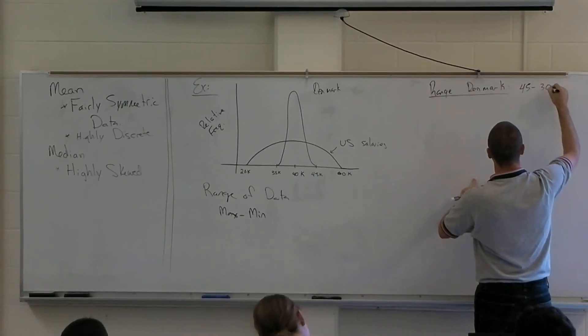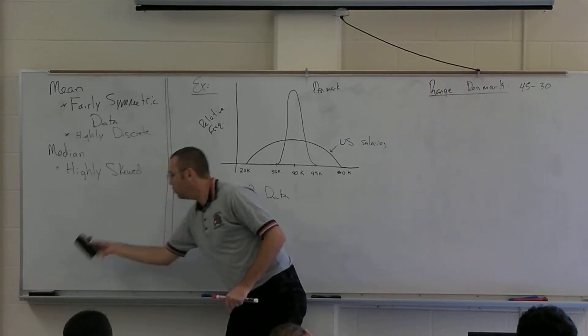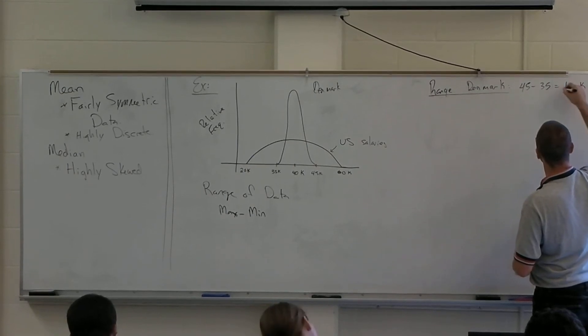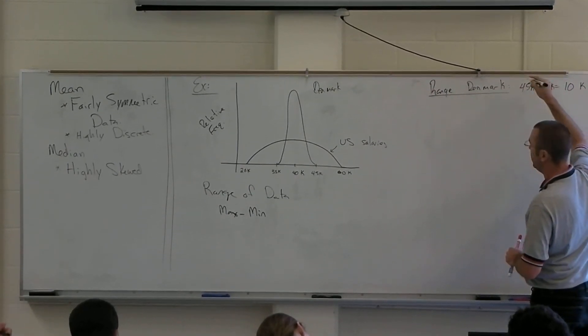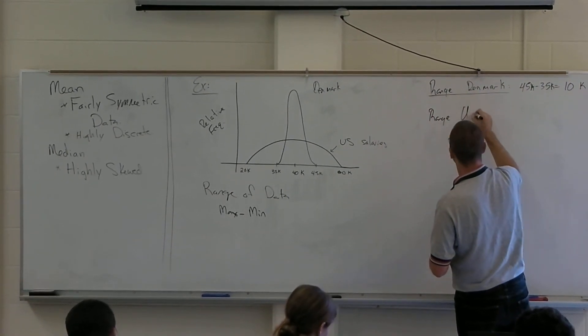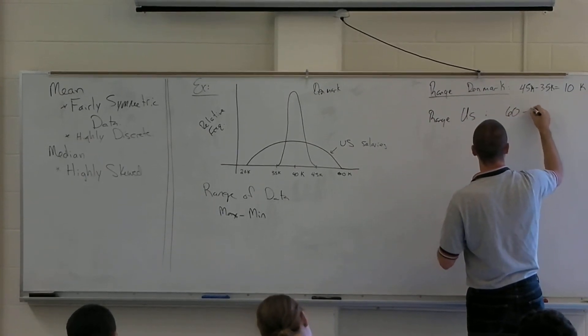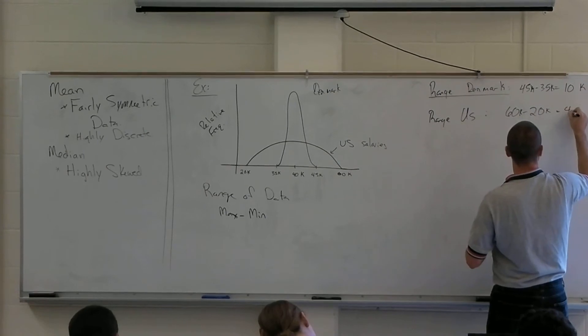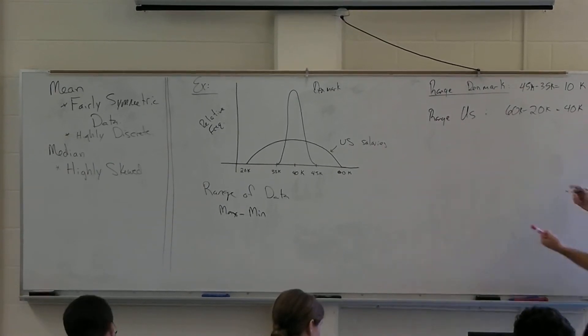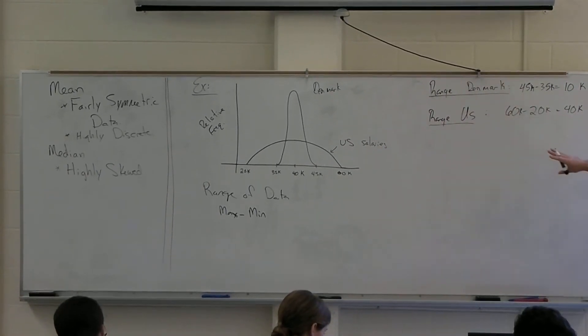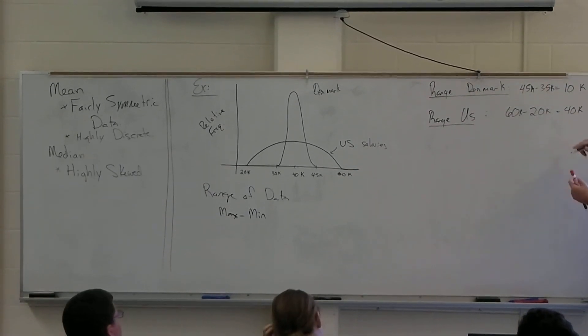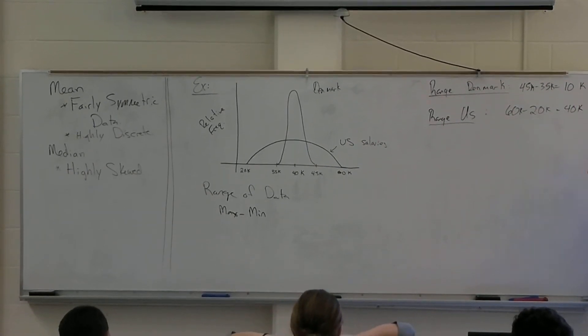So it has a range of 10,000. Alright. What's the range for the U.S. salaries? 40,000. That's 60 minus 20, that's a range of 40,000. So these additional values allow us to sort of distinguish a little bit better between these two graphs. Okay. One of them has a range of 40,000. The U.S. one's got a bigger range. The Denmark one, obviously, the smaller range.